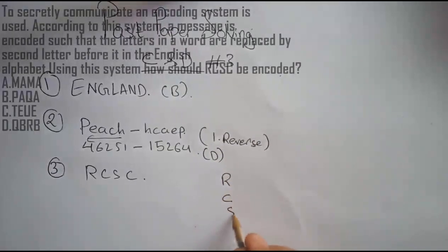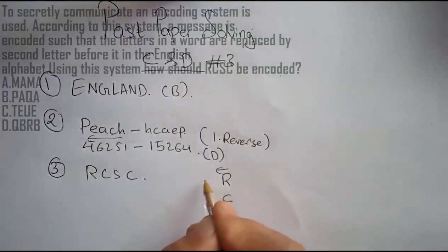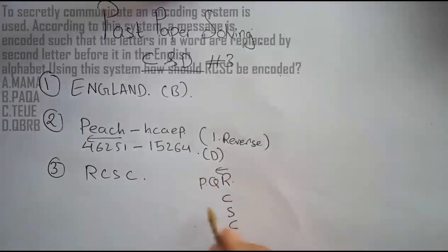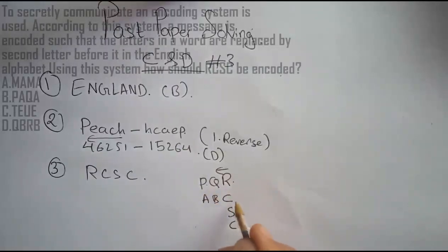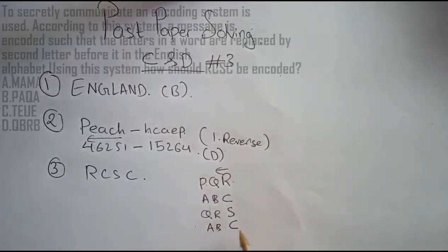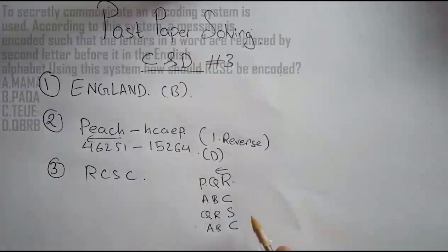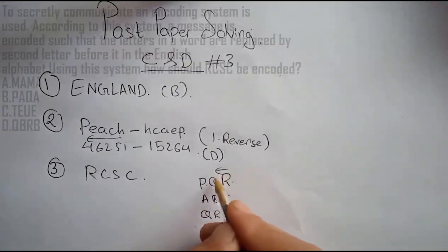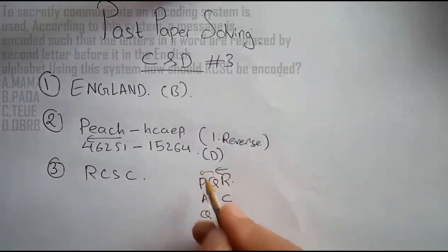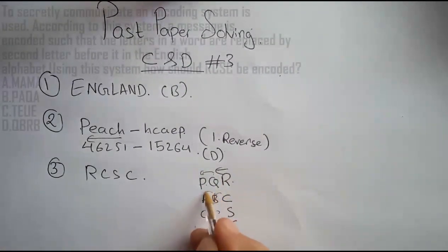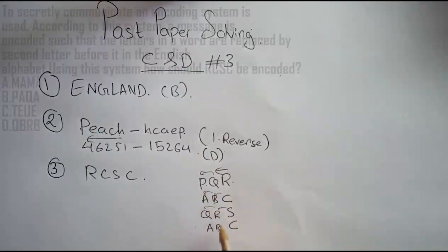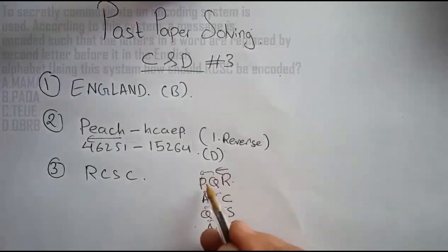Looking at the condition, the second letter before it in the English alphabet. For R: P-Q-R, so we get P. Similarly, for C: A-B-C, so we get A. Second letter before means going back by two.